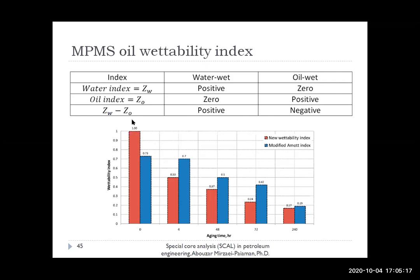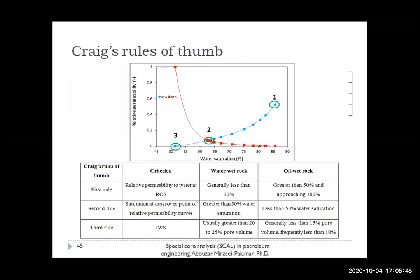A comparison between our proposed MPMS index and the AMOTT index shows a very good and satisfactory correlation. But this technique is advantageous because it is only based on spontaneous imbibition and is derived from theory rather than being empirical. We can also use relative permeability curves in water-oil systems to get qualitative insights on wettability. Craig in his book proposed three rules of thumb for studying wettability from relative permeability curves. The first rule uses relative permeability to water at residual oil saturation, the second uses saturation at the crossover point of relative permeability curves, and the third uses the value of connate water saturation or interstitial water saturation.